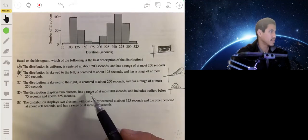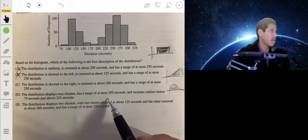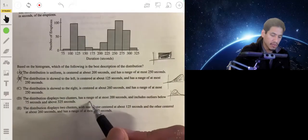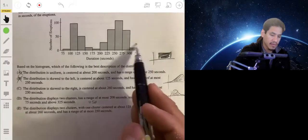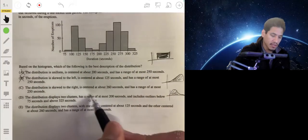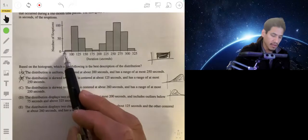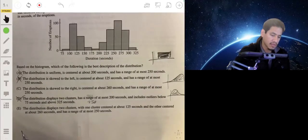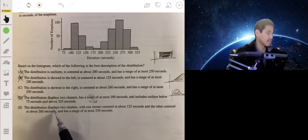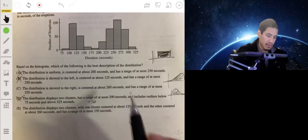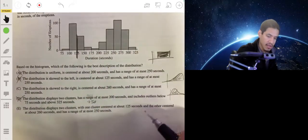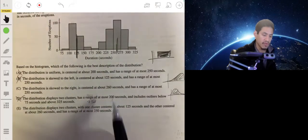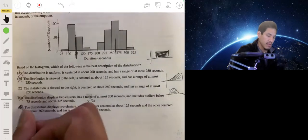Two clusters - okay, that makes sense. Has a range of at most 200. So the range would be going from 75 to 325, and the range would be 250. So the range is not right. And it doesn't have outliers below 75 and above, so it's not that. So it's going to be E by elimination, but let's just break it down. Two clusters - one cluster is centered at 125, that's about there. Another one centered about 260, so maybe about there. And the range of at most 250, and that's the range we got from previous parts. So that would be answer E.